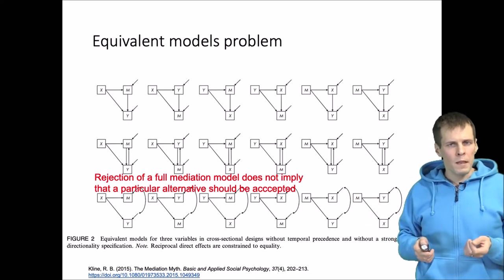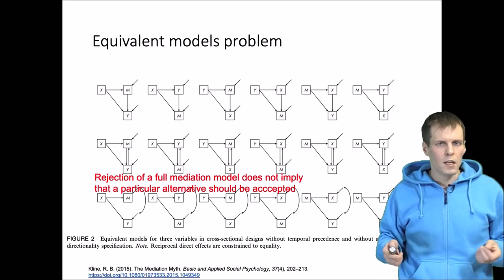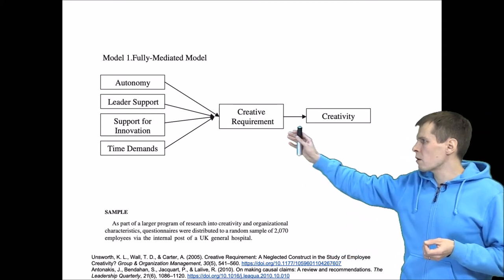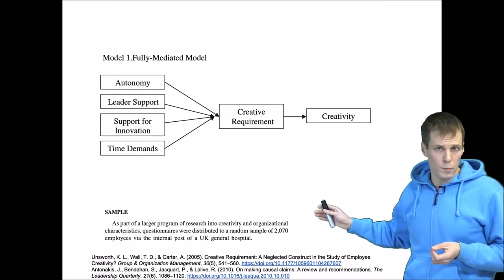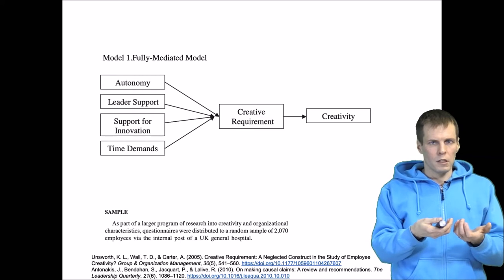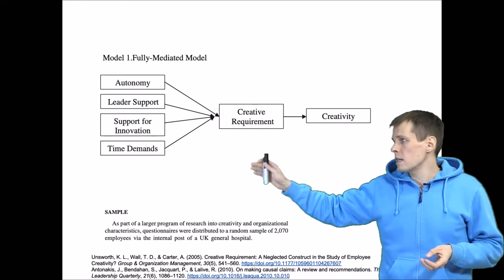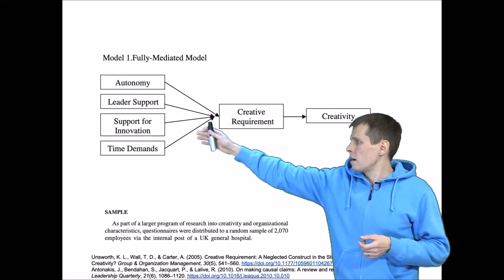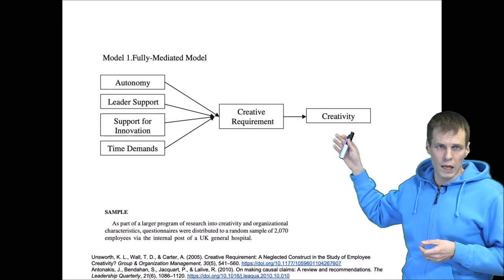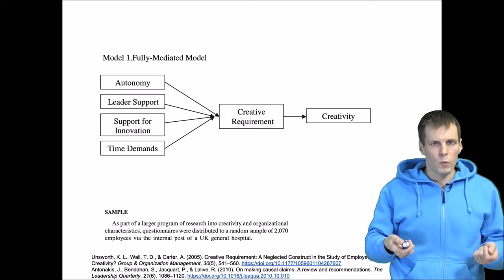However, the partial mediation model may not be theoretically the most desirable model. Let's take a look at an example. This example comes from Unsworth, who studied creative requirement and creativity in the context of a hospital. Creative requirement is basically how much creativity the task or job of a person requires. They had some antecedents and built a theory that these characteristics of leaders and the work environment lead to creative requirement, which in turn influences individual-level creativity. This is a full mediation model. This model did not fit the data, and then the researchers went for a partial mediation model.